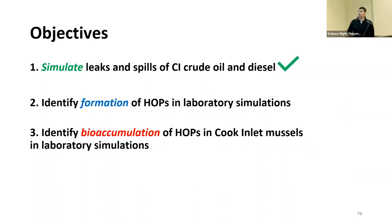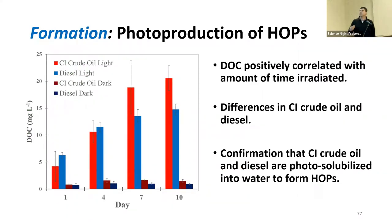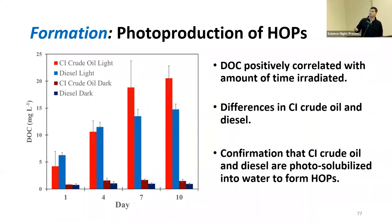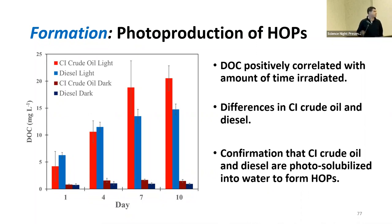To identify hydrocarbon oxidation products (HOPs), we can qualify them as dissolved organic carbon. Looking at samples exposed to light versus those in the dark, we see a rapid increase in dissolved organic carbon — this tells us we're forming oxygenated products that partition into the aqueous phase. The dark samples have some water-soluble compounds, but they're not as abundant as in the light-exposed samples. This happens for both diesel and crude oil, to different extents.